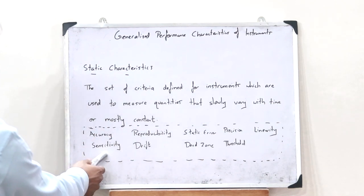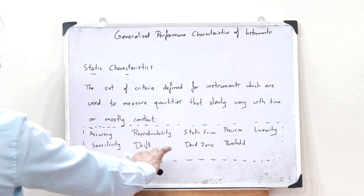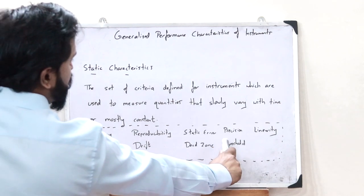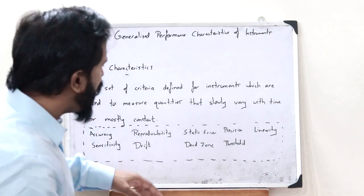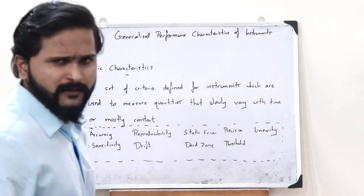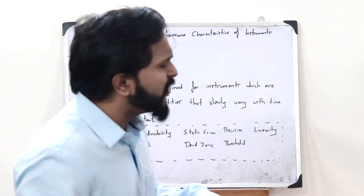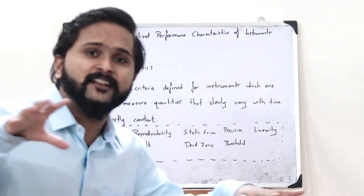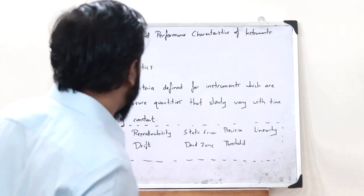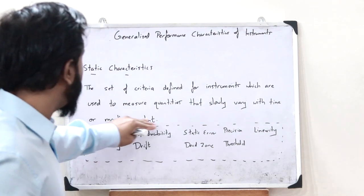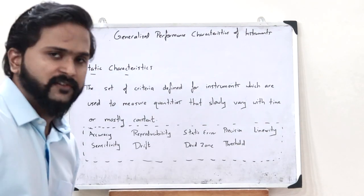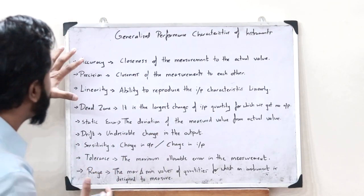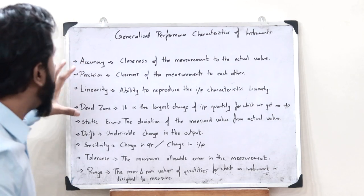Here are certain static characteristics: accuracy, sensitivity, reproducibility, drift, static error, dead zone, precision, threshold, and linearity. Let us see what each of these static characteristics are.